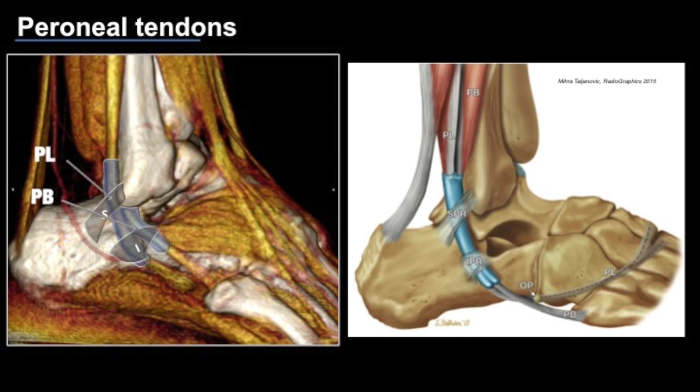In the retromalleolar segment, the peroneus brevis lies anteriorly to the peroneus longus. The peroneus brevis has a shorter course as it attaches over the base of the fifth metatarsal, whereas the peroneus longus, as it goes into the inframalleolar segment, travels inferior to the peroneal tubercle and enters the foot.